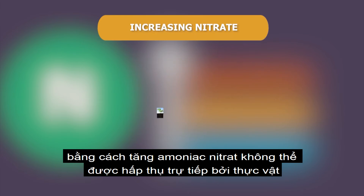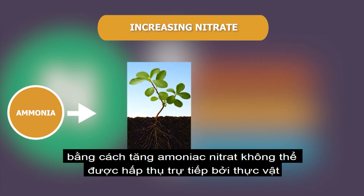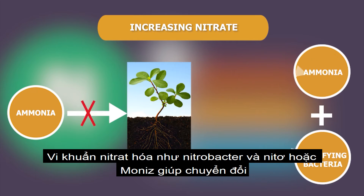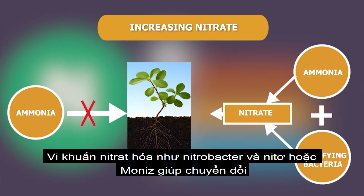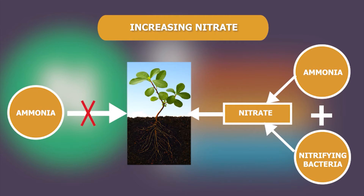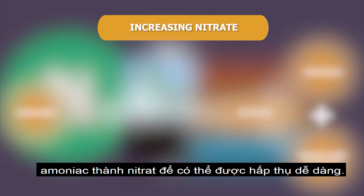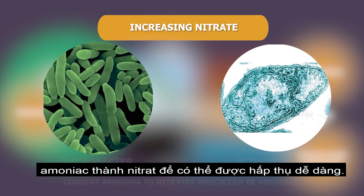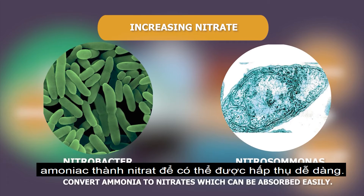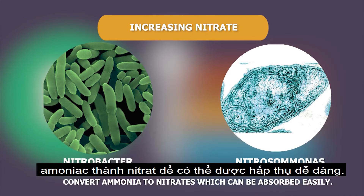Second, by increasing the nitrate. Ammonia cannot be directly absorbed by plants. Nitrifying bacteria such as Nitrobacter and Nitrosomonas help in converting ammonia to nitrates, which can be absorbed easily.